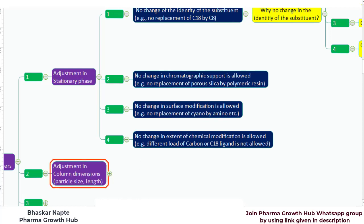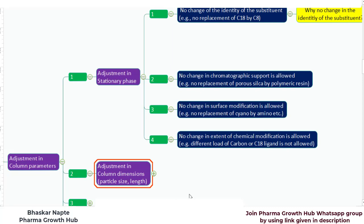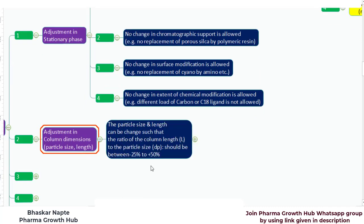The second point when it comes to liquid chromatography column parameters is the adjustment in column dimensions — specifically particle size and length. The guidance provided by USP General Chapter 621 is: the particle size and length can be changed such that the ratio of column length (L) to particle size (DP) should be between minus 25% and plus 50%. The ratio must be maintained in the range of −25% to +50%.